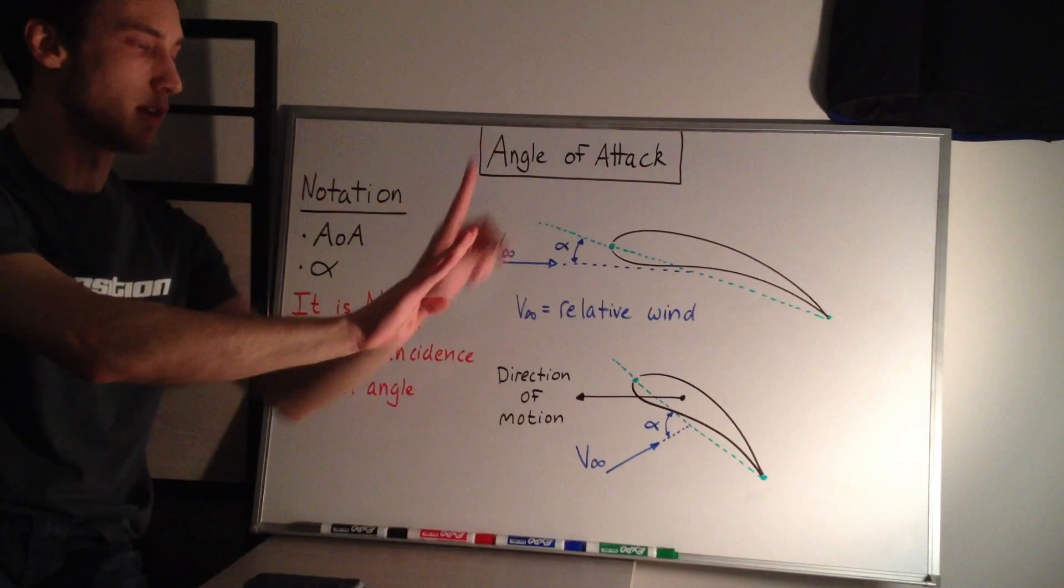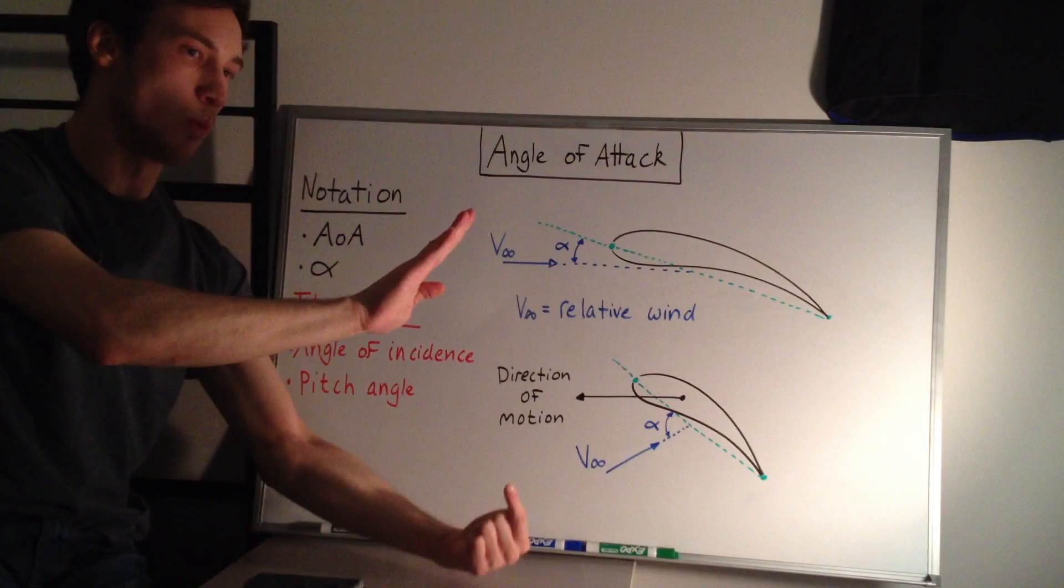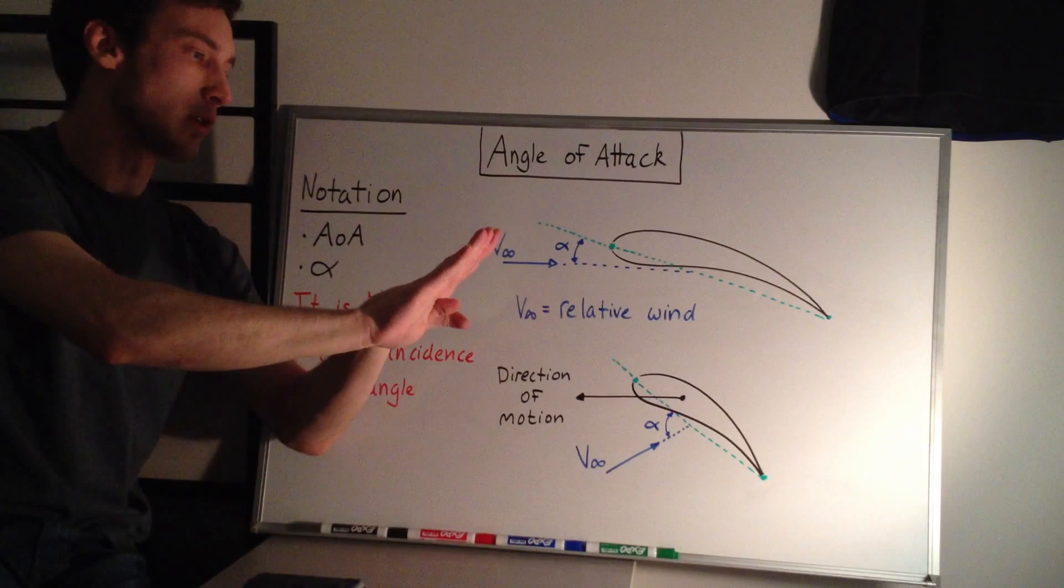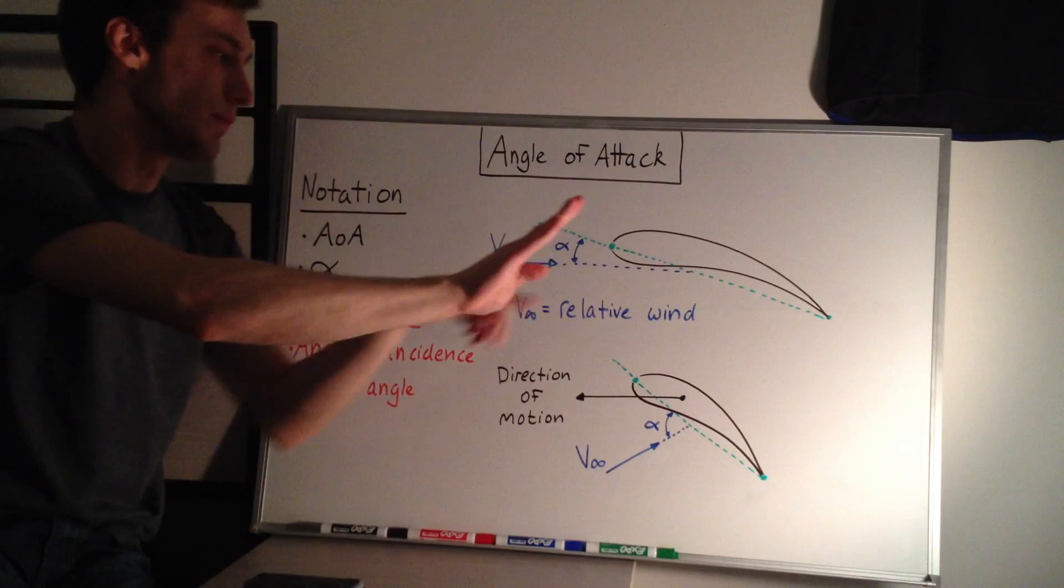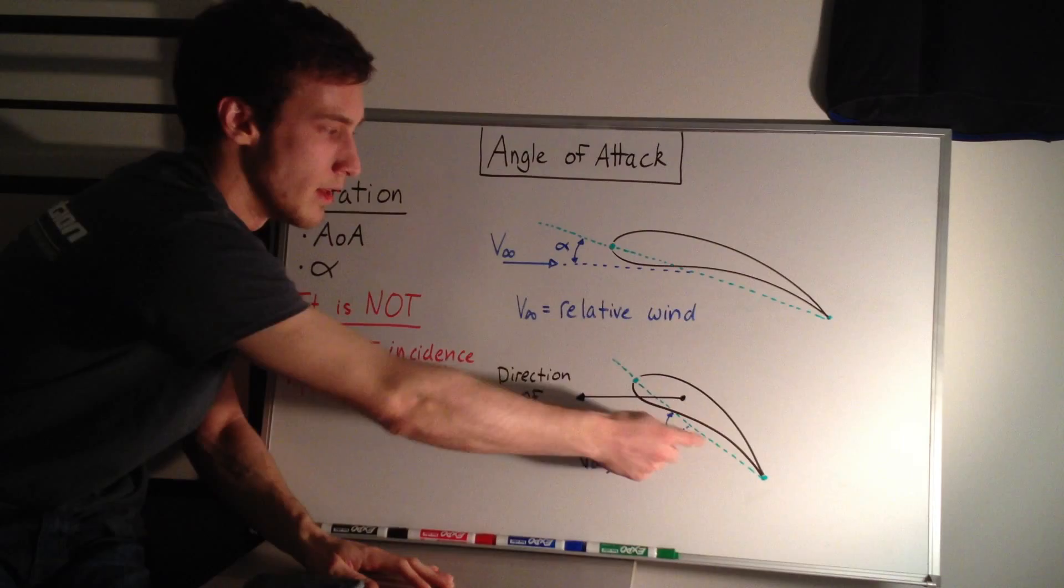So this is the airfoil like this, cord line like this. My direction of motion is me going this way, but locally, the wind, imagine somebody blowing on my hand from down here. So the angle of attack is not the cord line with respect to the direction of motion. The angle of attack is actually the angle between the person blowing on my hand and the cord line of my hand, which is why I've written the angle of attack here is between the blue relative wind and the green cord line, and that's the alpha.